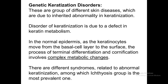In normal epidermis, the keratinocyte develops and is born in the basal cell layer or stratum basale. The process of terminal differentiation and cornification involves a journey where the keratinocyte passes upward through the layers of the epidermis until it ends in the stratum corneum, where it loses its nuclei, becomes cornified, and forms a dead layer. There are different syndromes related to this abnormal keratinization, among which ichthyosis is the most prevalent, and is covered in a separate lecture.